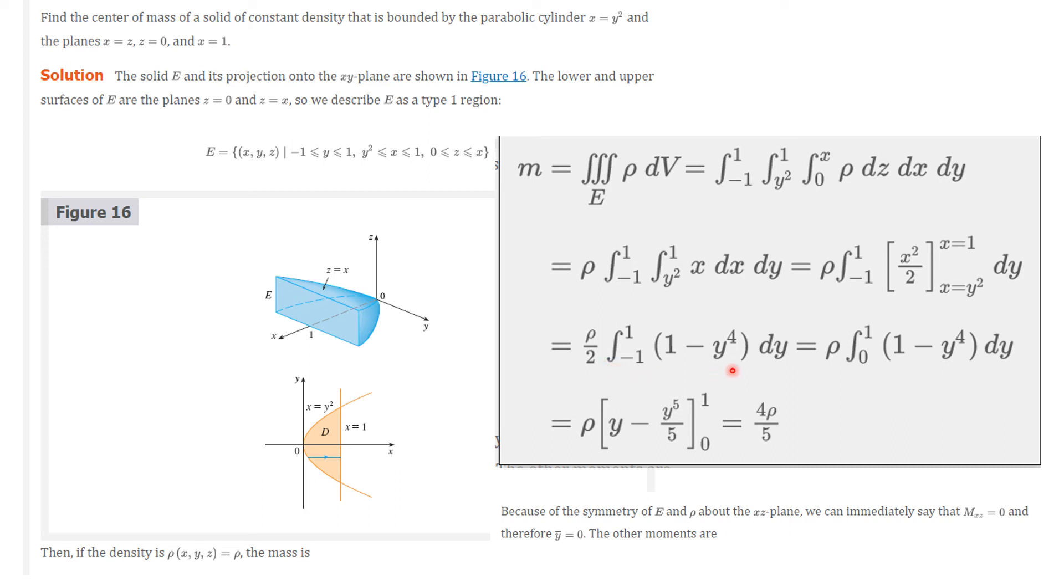And I'm integrating this dy, going from here to here. I recognize that this is an even function. So going from minus 1 to 1 is the same as 2 times going from 0 to 1. So I simplified the integral because it's easier to evaluate with a 0. And I integrate. This is going to be y minus y to the fifth over 5. I evaluate that at 1 and 0. And I get 4 rho over 5.